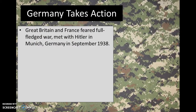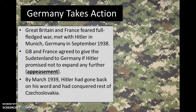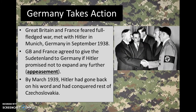Great Britain and France were afraid of war breaking out all across Europe, so they met with Hitler in Munich in September of 1938. They agreed to give the Sudetenland to Germany if Hitler promised not to expand any further — this is called appeasement, basically giving Germany what it wanted as a trade-off for no further action. Hitler originally agreed, and the Prime Minister of Great Britain even told his people that they had prevented war and there would be peace. But by March of 1939 — just seven months later — Hitler had gone back on his word and conquered the rest of Czechoslovakia.